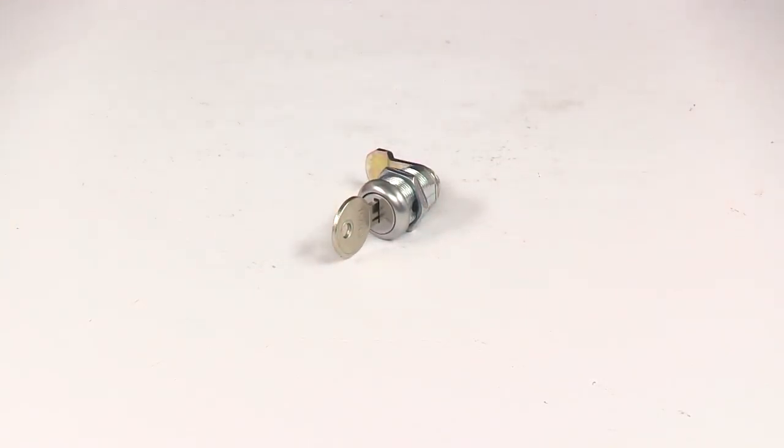This is key number 751. It fits in and controls the lever. That's going to do it for today's look at the Valterra replacement cam lock with key for hatch doors.